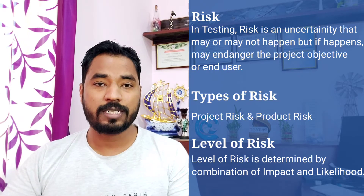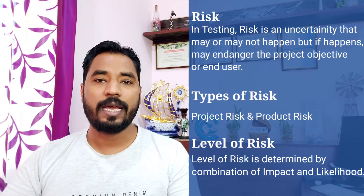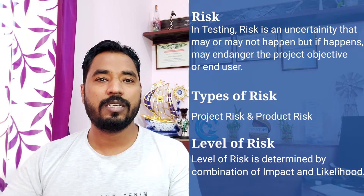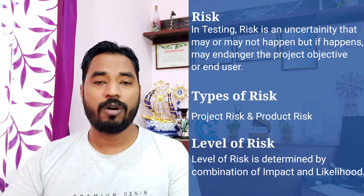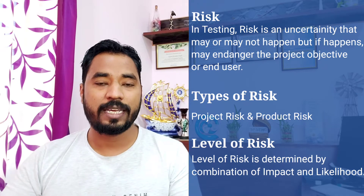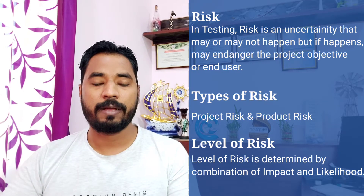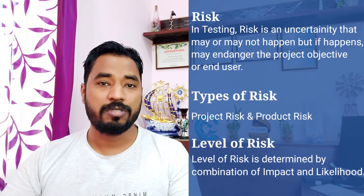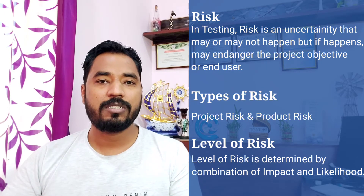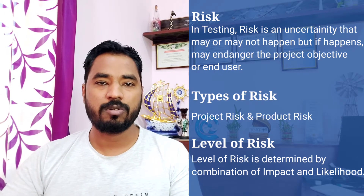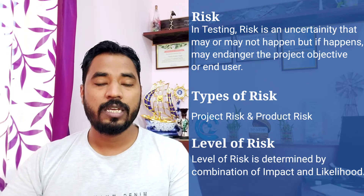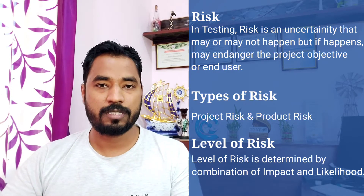Whereas product risk is related to the end product itself. If anything goes wrong with the product — like a product being unable to deliver the desired set of functions, or quality characteristics like performance testing, security testing, or usability — all these parameters are related to the quality characteristics of the product. If they have any kind of risk associated with them, we call it a product risk.